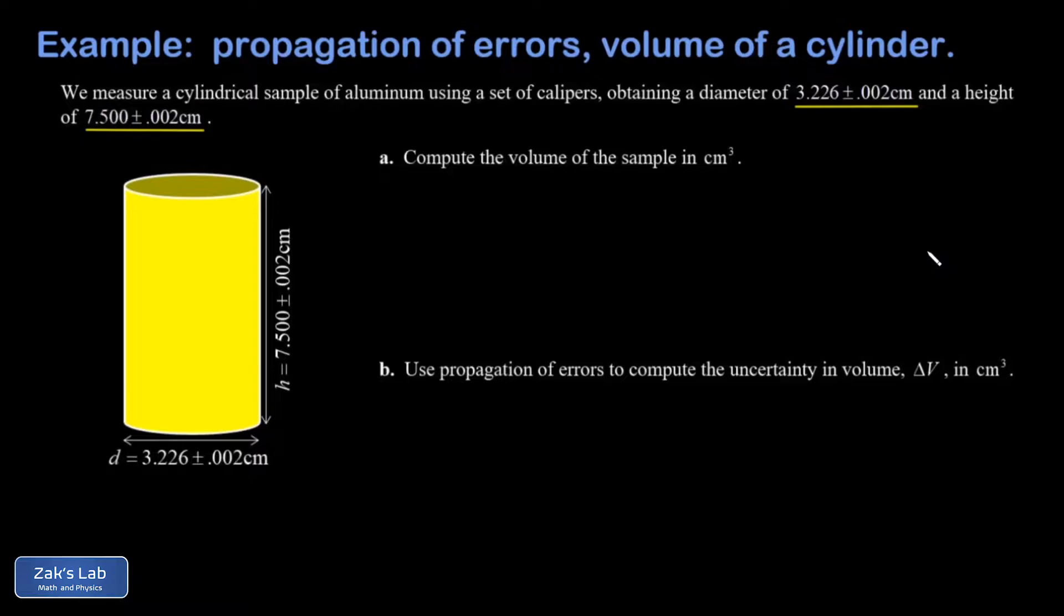We begin in part A by finding the volume of the sample in cubic centimeters. The volume of a cylinder is just the area of the base multiplied by the height.